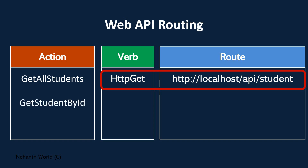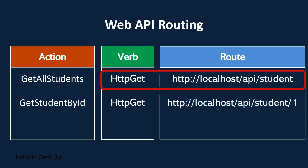The next action is 'Get Student By ID' — the second action in the controller. This action is also HTTP GET. You might ask: can a single controller have multiple HTTP GET methods? Yes, it can. You can execute a specific method using the combination of the HTTP verb and the route.